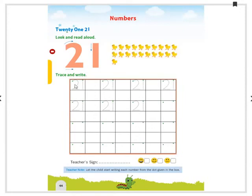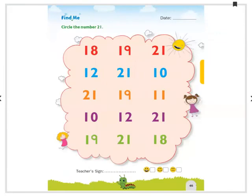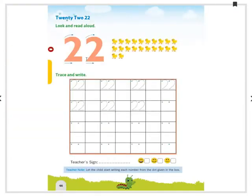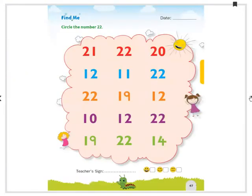You have to count it then trace it and then write this one. After completing do the activity in page number 45. Circle the number 21. Do the same with page number 46 number 22. Count all the chicks, trace the number 22 and write the number 22 in given boxes and perform the activity. Right?